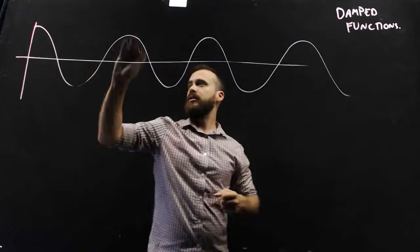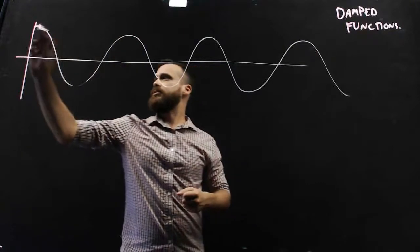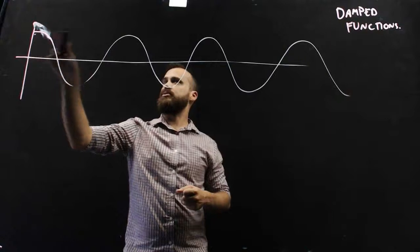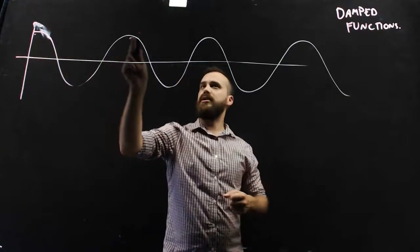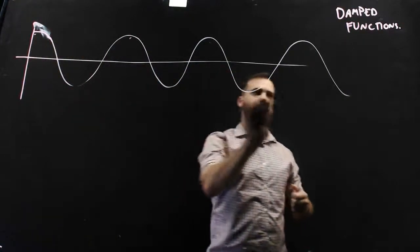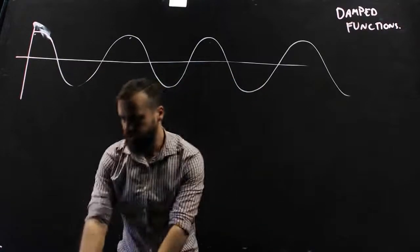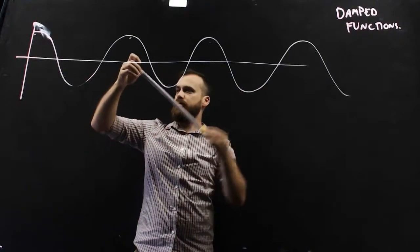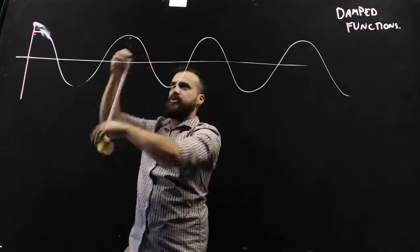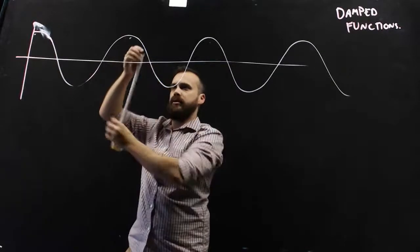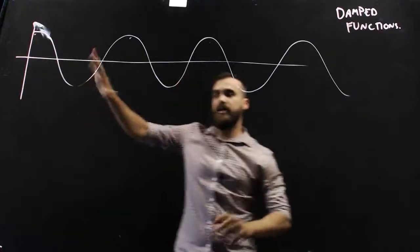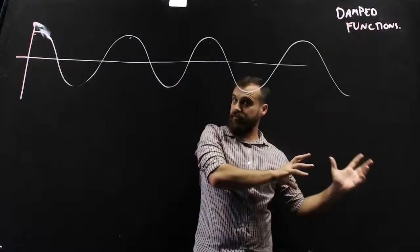So it starts at its highest point, comes down to the lowest point, back up to the highest point, back down to the lowest point, and so on and so forth — and there's our periodic function.